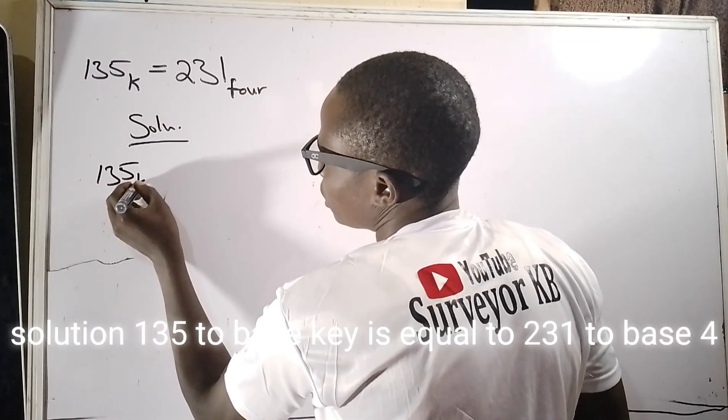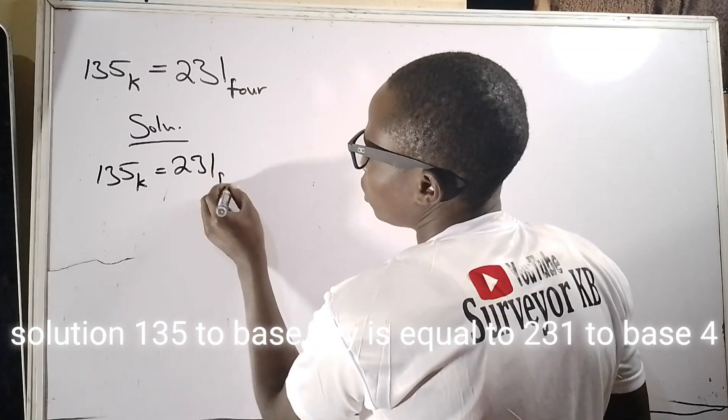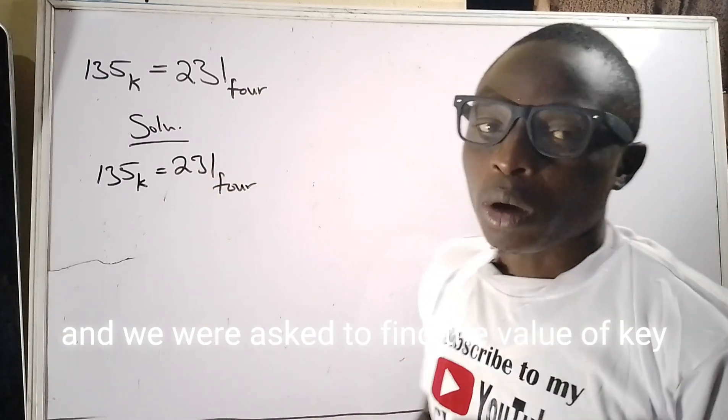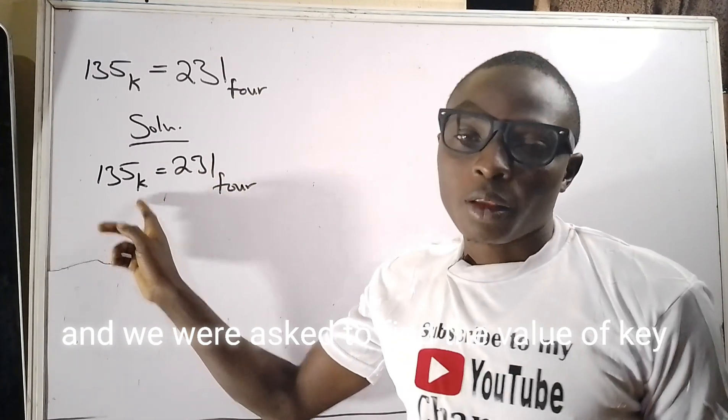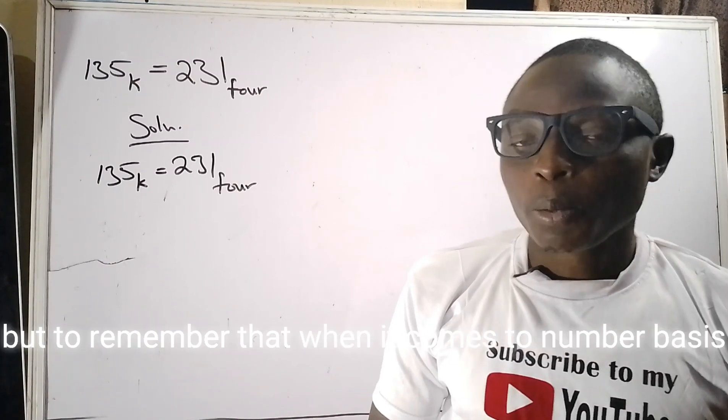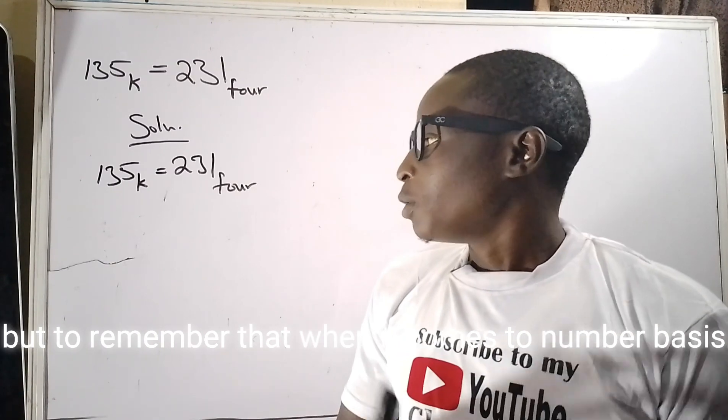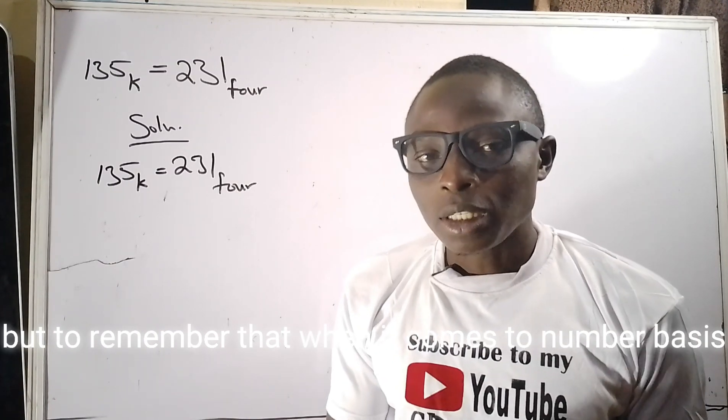Solution: 135 to base k equals 231 to base 4, and we were asked to find the value of k. But remember that when it comes to number bases, it involves natural counting from zero.